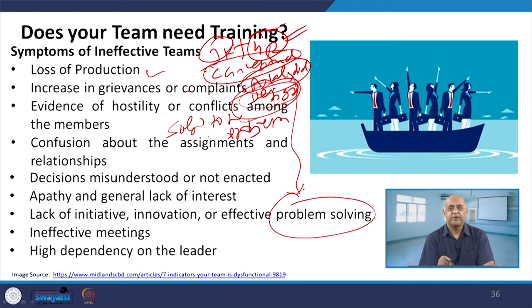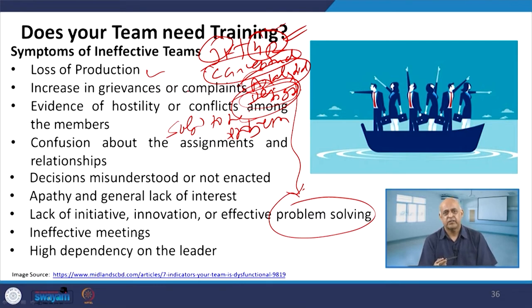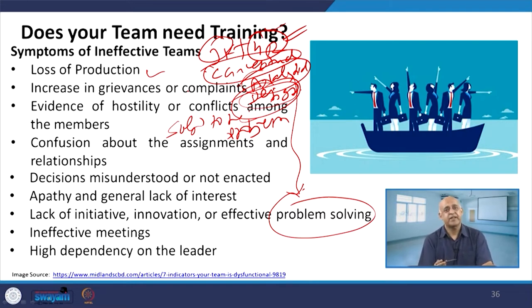Some people are able to find solutions even in the toughest times. A simple example: if an organization is not able to survive, what will be the solution? Either close the organization — many people would say that — but some will say diversification of the business. But if money is not there for diversification, that is why the organization is closing. Then how to manage the money?